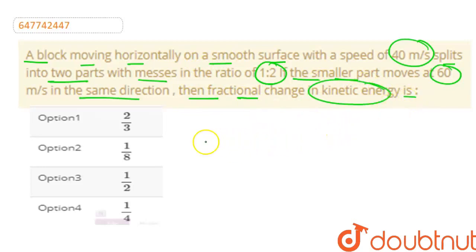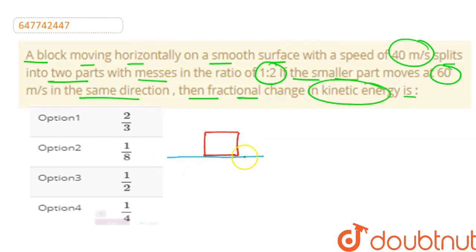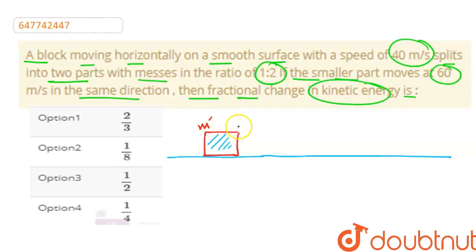Now let's understand this. This is our block on the surface. And we have to give it a velocity. Let's say its total mass is M'. And this velocity we have to assign — that is V = 40 meters per second.